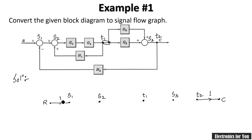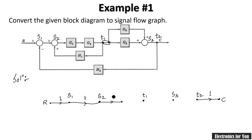Now let's connect them. Between S1 and S2 there is no block, so the gain is one. Between S1 and T1 there are two blocks — G1 and G2. We have two options: multiply them directly as G1×G2, or introduce an intermediate node with G1 then G2 separately. I am choosing to write G1 and G2 as separate branch gains.